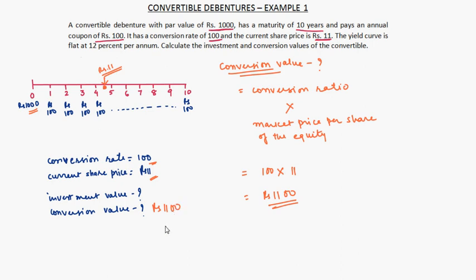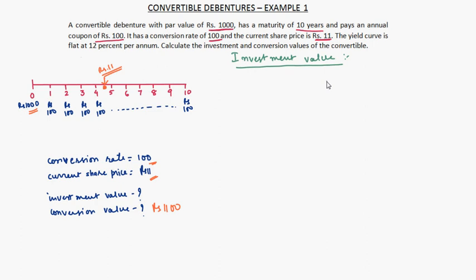Now let us find out the investment value. The investment value of a convertible debenture is calculated by treating it as if it is a non-convertible debenture — that is, without the feature of conversion. You continue to get the annual interest, and at maturity you get your investment money back. At the end of 10 years you receive rupees 100 interest plus rupees 1000 principal.